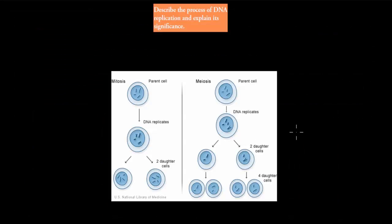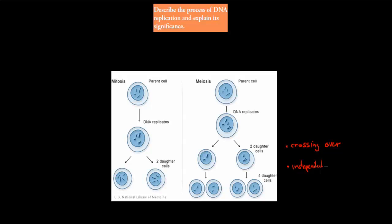We've talked quite a bit about meiosis so far — about the idea of crossing over, where you have different types of chromosomes sharing or swapping parts of their actual chromosome. We also talked about independent assortment, where random chromosomes go from the diploid number to the haploid number. We talked about how important that is for variation. But what we also need to focus on is actually how we make sure that this can happen — and that's DNA replication.